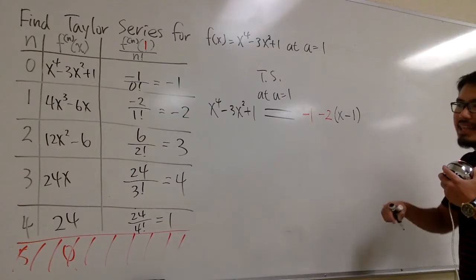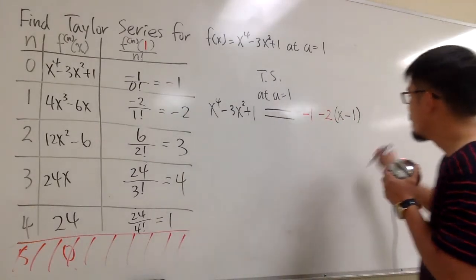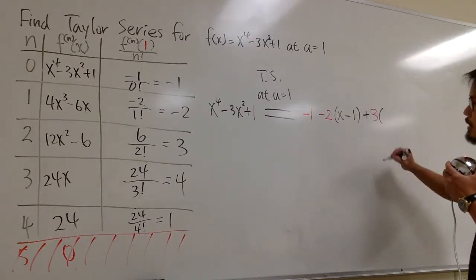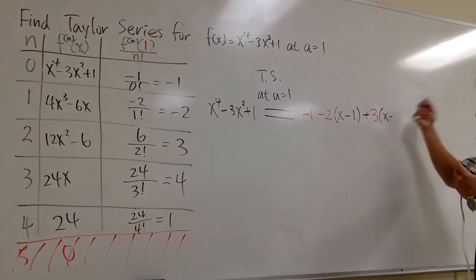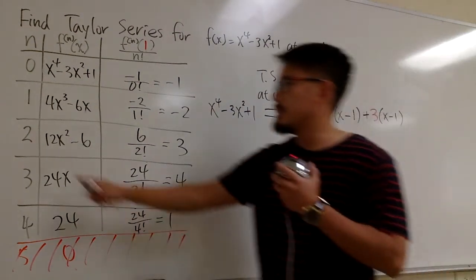And then the next term is going to be, this is the coefficient. It's positive 3, so we add the 3. And then we multiply by x minus the a value, which is the 1. And this is to the 2nd power.